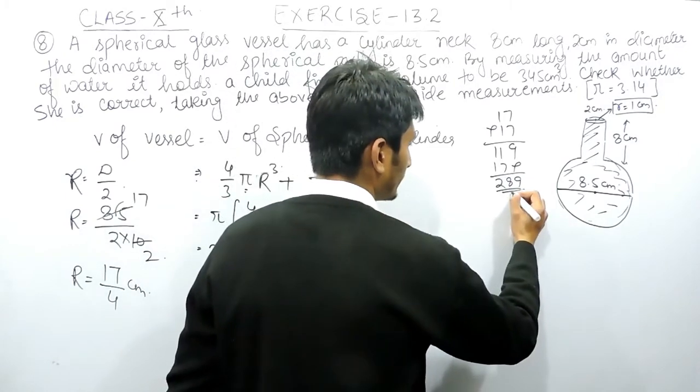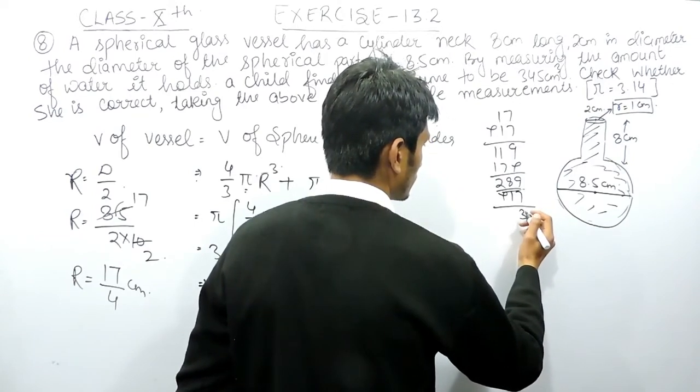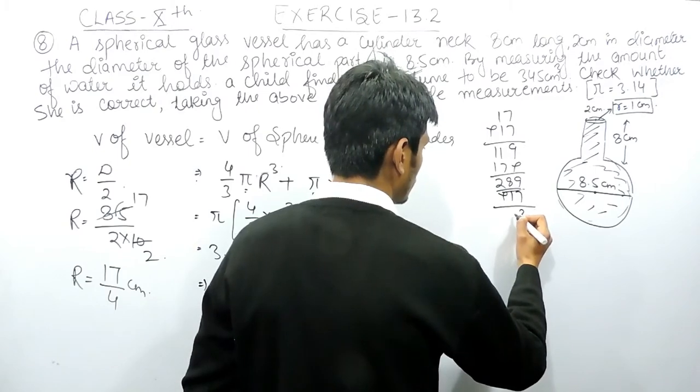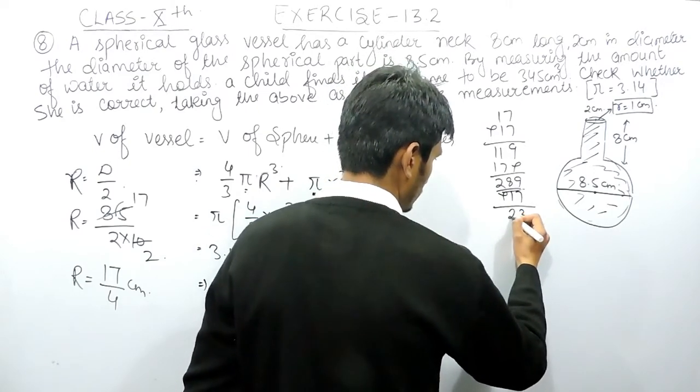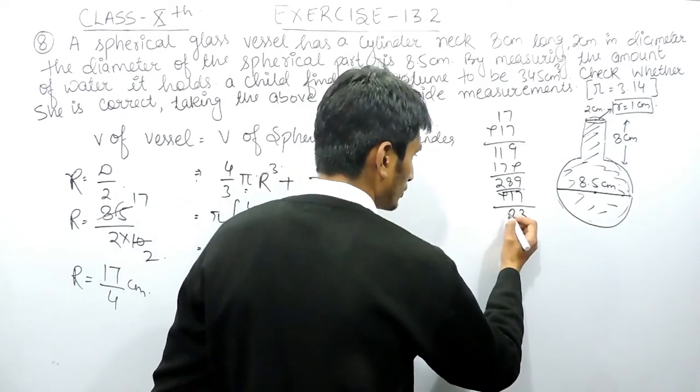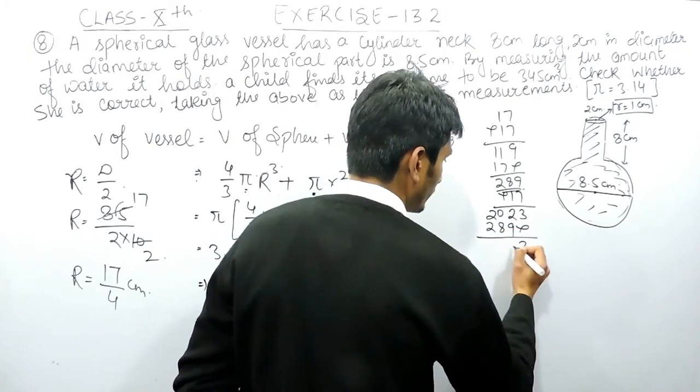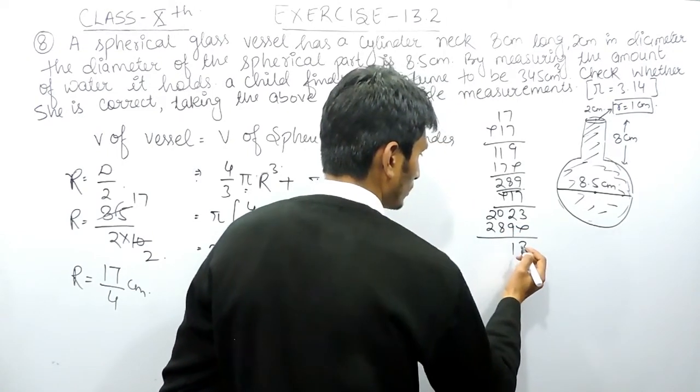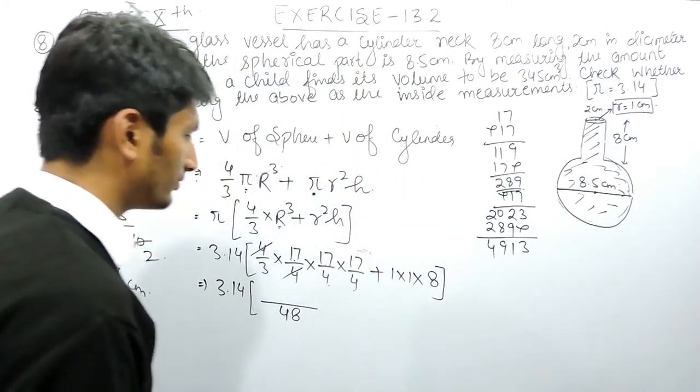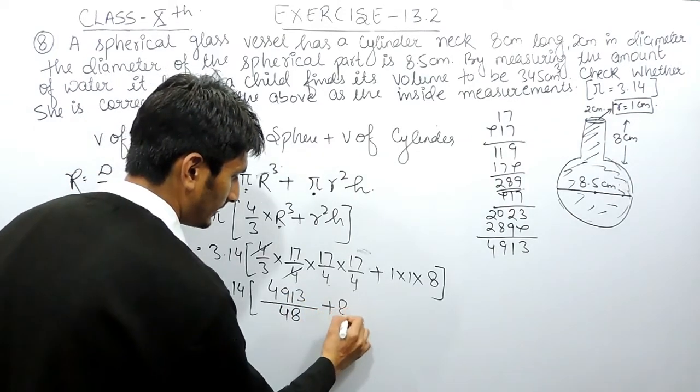This will be 289 times 17 which equals 4913. So this will be 4913 plus 8.